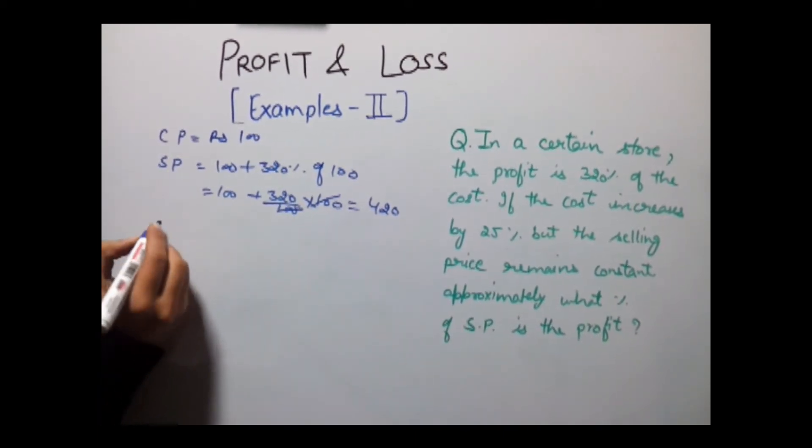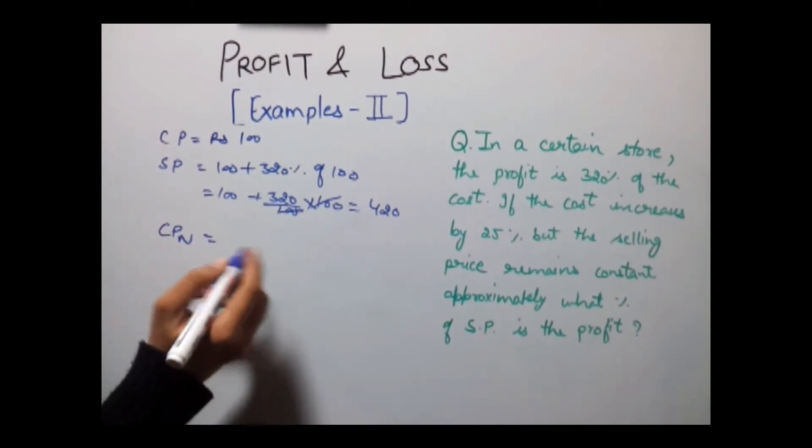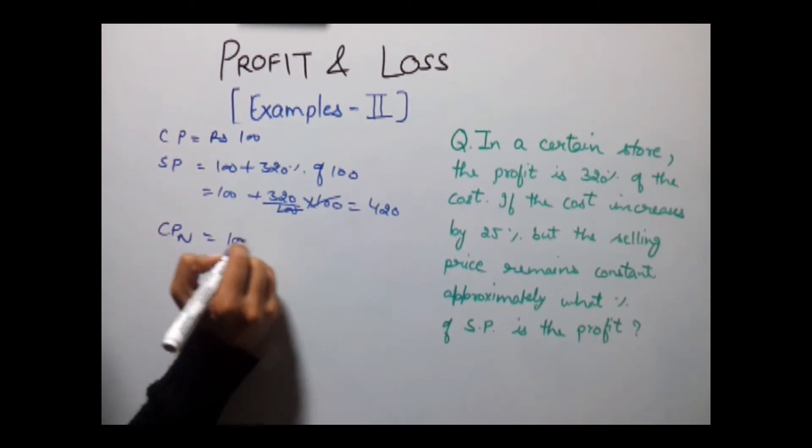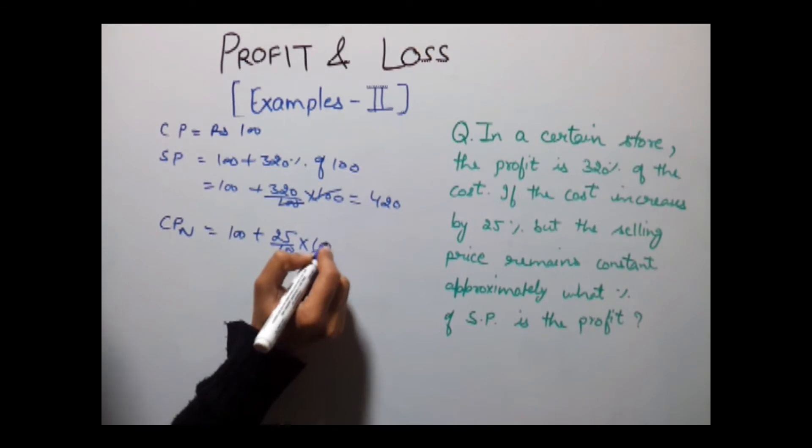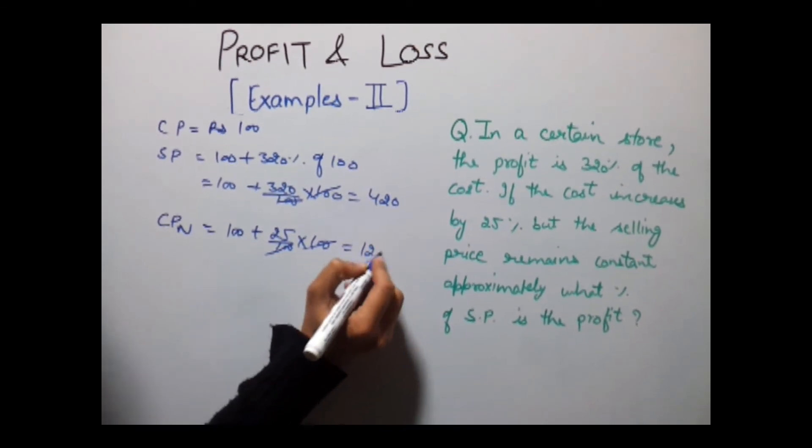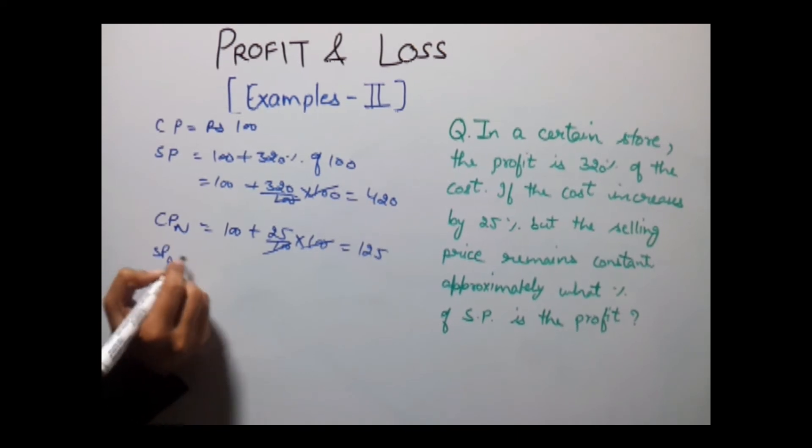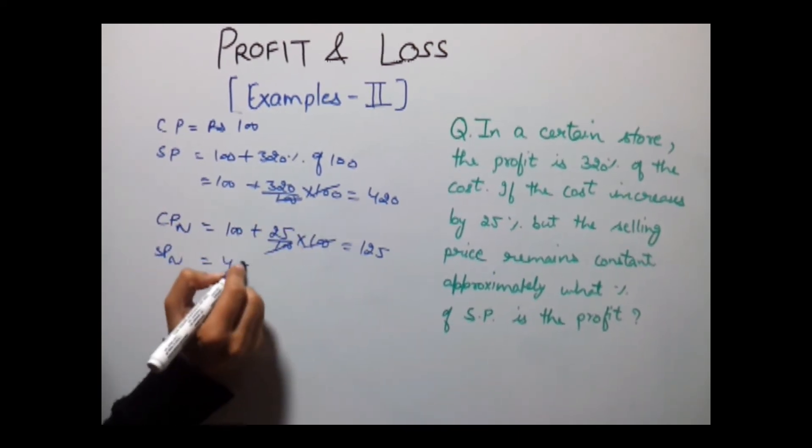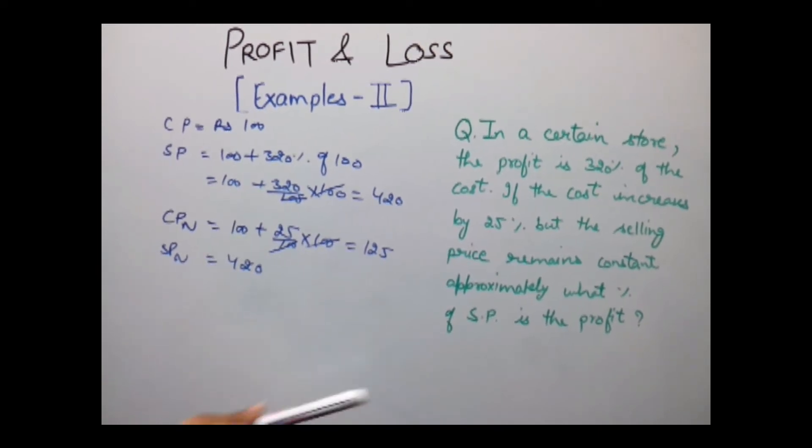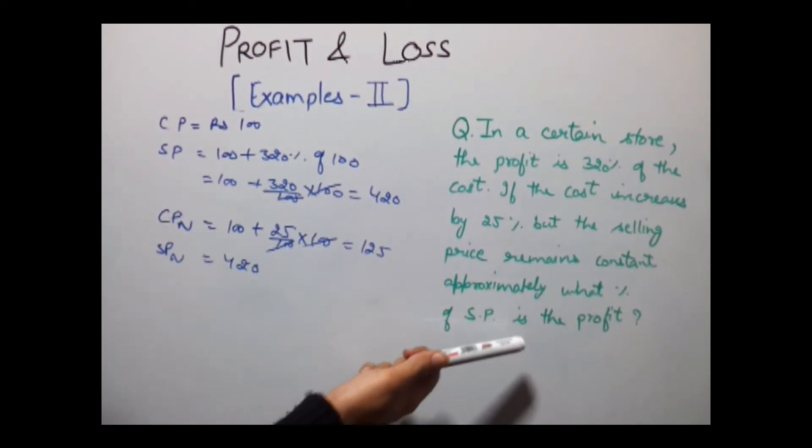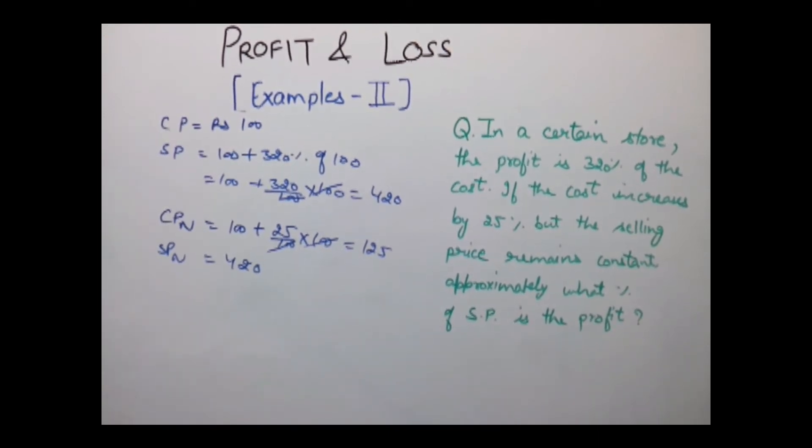Now in the new case, if the cost increases by 25 percent, so our new CP is equal to 100 plus 25 percent of 100, that is 125 is our new CP. And our new SP is same which is 420.